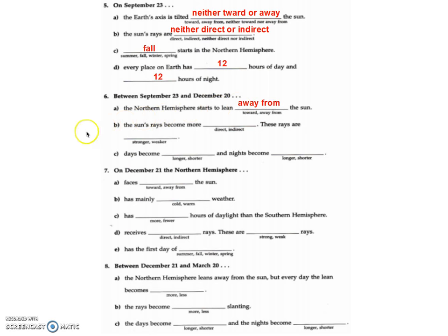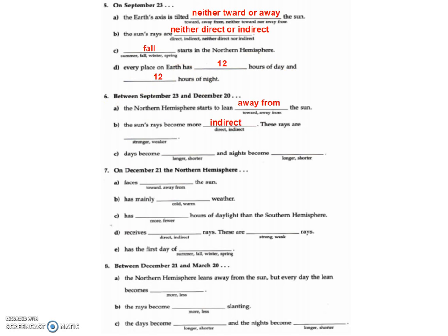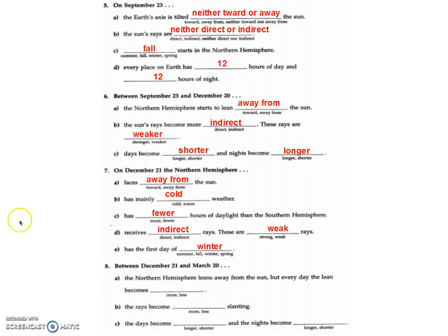Starting in September through December, we're entering fall, so we're leaning away from the sun. The distance is going to be fundamentally the same — the pictures show it to be further away in December and June, but it's actually pretty circular; we're pretty much the same distance, more circular than the pictures suggest. Therefore we're having weaker rays, shorter days, and longer nights.